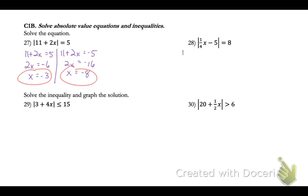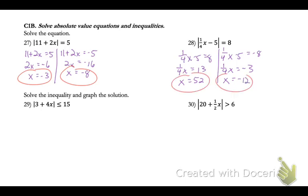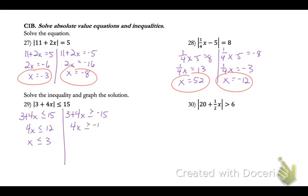For number 28, drop the absolute value bars and set up both the positive and negative cases. Adding 5 to both sides and then multiplying by 4, we get x equals 52; and for the other case, adding 5 and multiplying by 4 gives x equals negative 12. For solving an absolute value inequality like number 29, set up two cases but switch the inequality sign when you switch the sign: 3 plus 4x is less than or equal to 15, and 3 plus 4x is greater than or equal to negative 15. So x is less than or equal to 3, and after subtracting 3, x is greater than or equal to negative nine-halves.